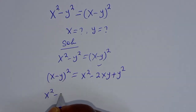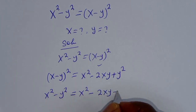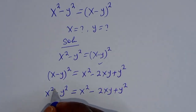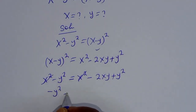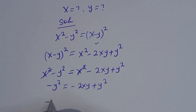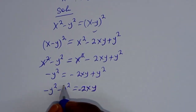So x² minus y² is equal to x² minus 2xy plus y². Looking at this, we cancel x² on both sides, leaving minus y² is equal to minus 2xy plus y².